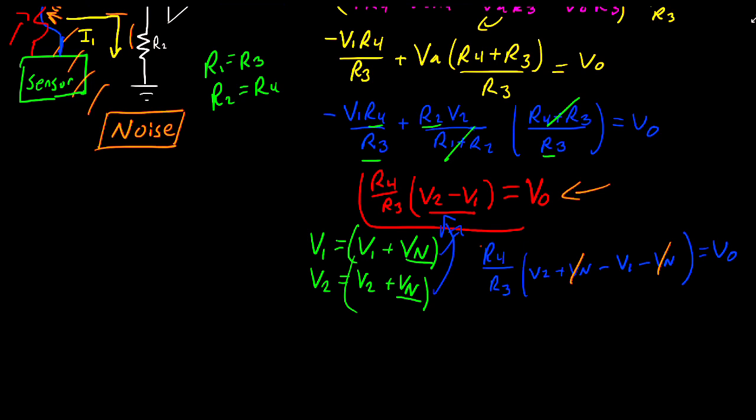Other topologies like inverting and non-inverting, those would be considered a single-ended topology. And in those circuits, because you only have the one input term, your output is going to carry this noise value with it. But differential amplifiers have the advantage that it can reject this.